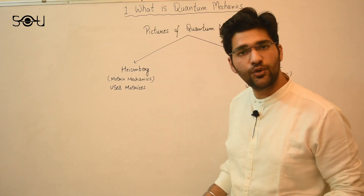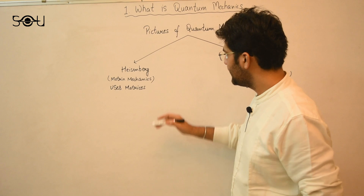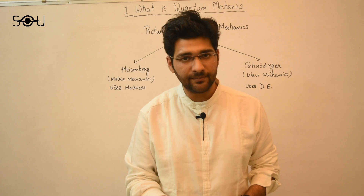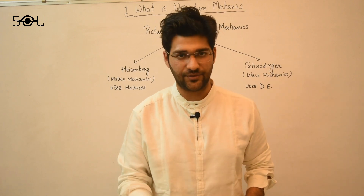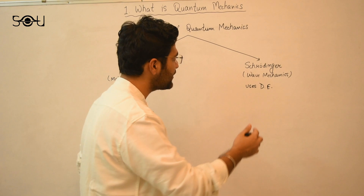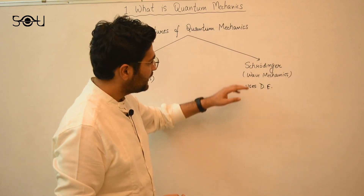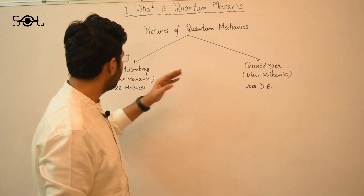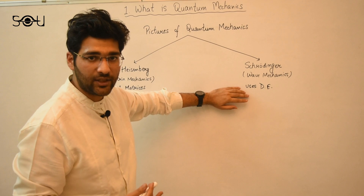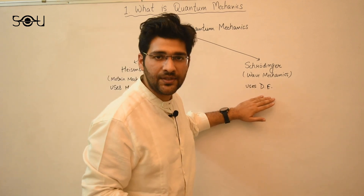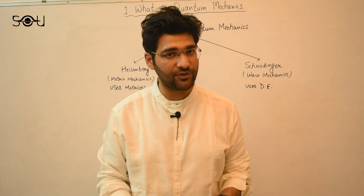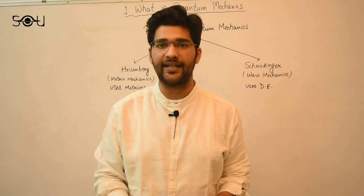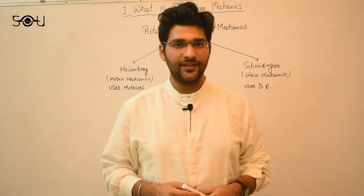Historically there are two pictures of quantum mechanics. The first is the Heisenberg picture, also known as matrix mechanics, where dynamical quantities such as position, momentum, and energy are described using matrices. Then we have the Schrödinger picture, given by Erwin Schrödinger, also known as wave mechanics — instead of matrices it uses differential equations, and this picture is more intuitive than the Heisenberg picture. Later it was shown that both pictures of quantum mechanics are essentially the same.